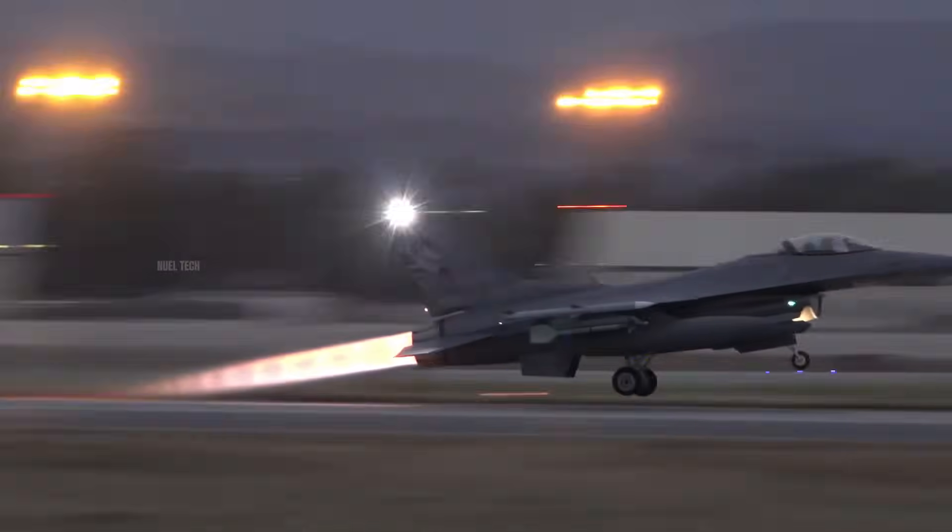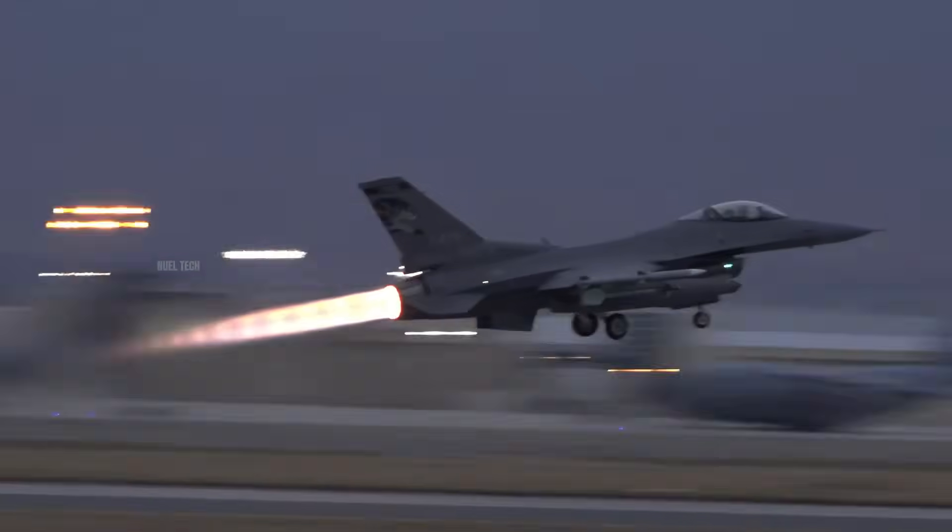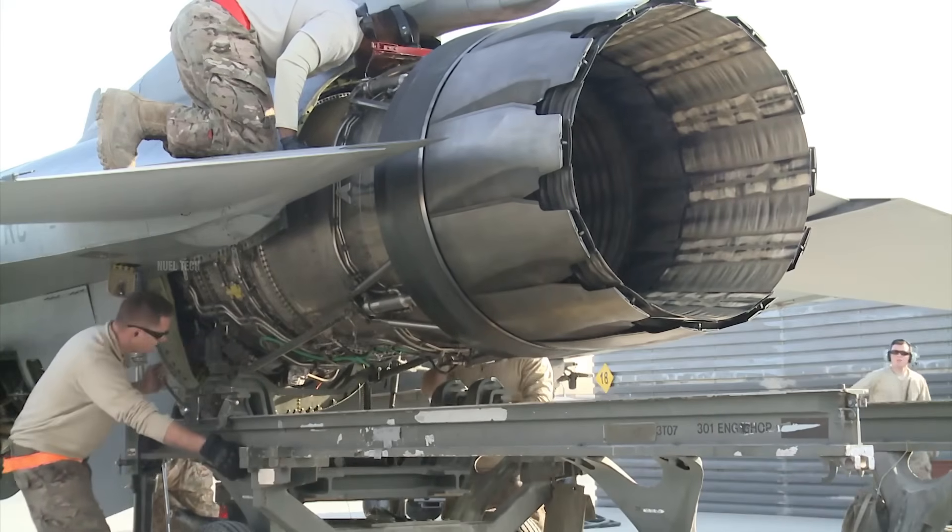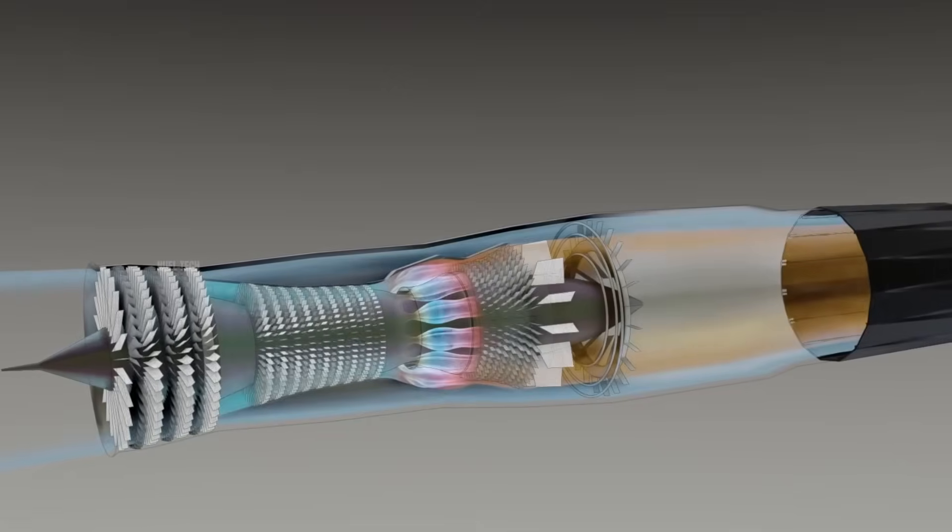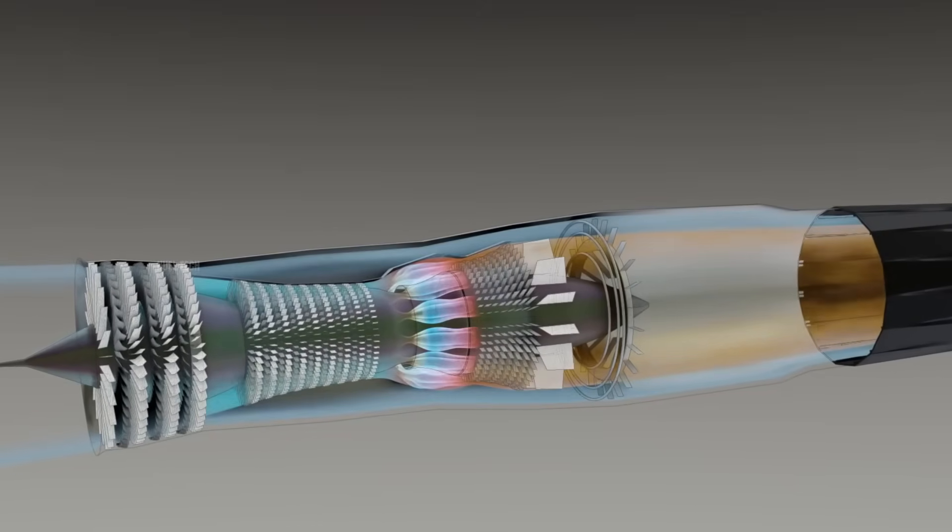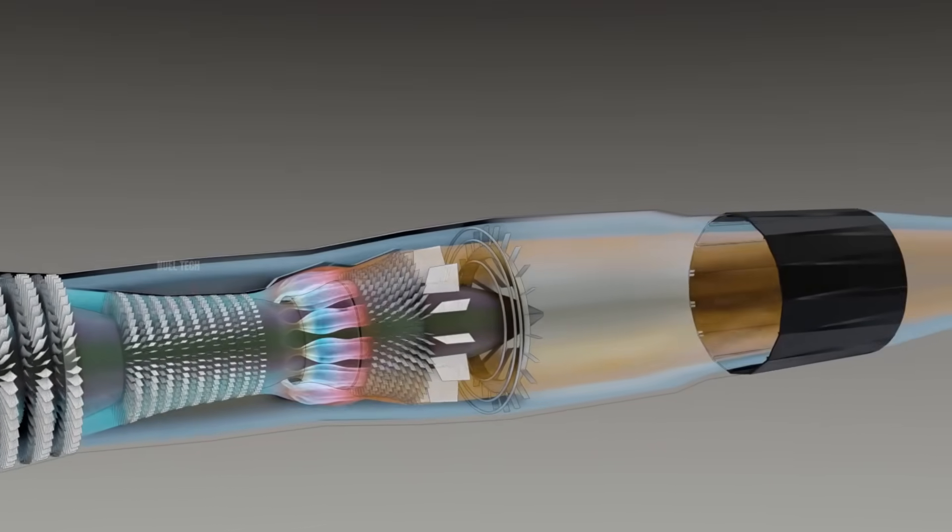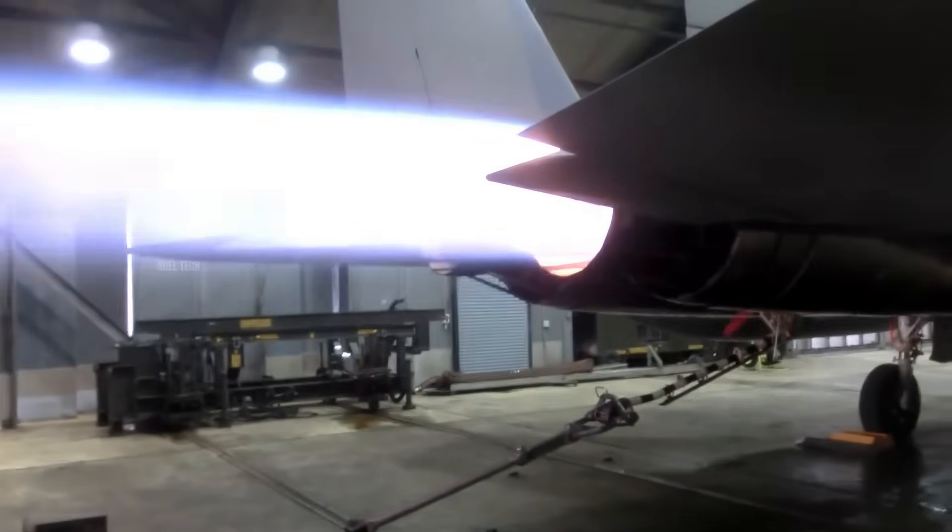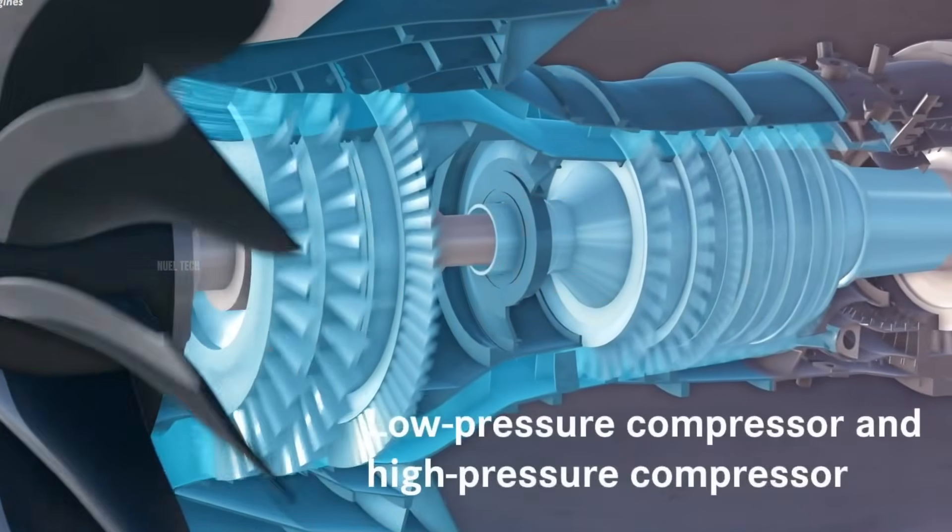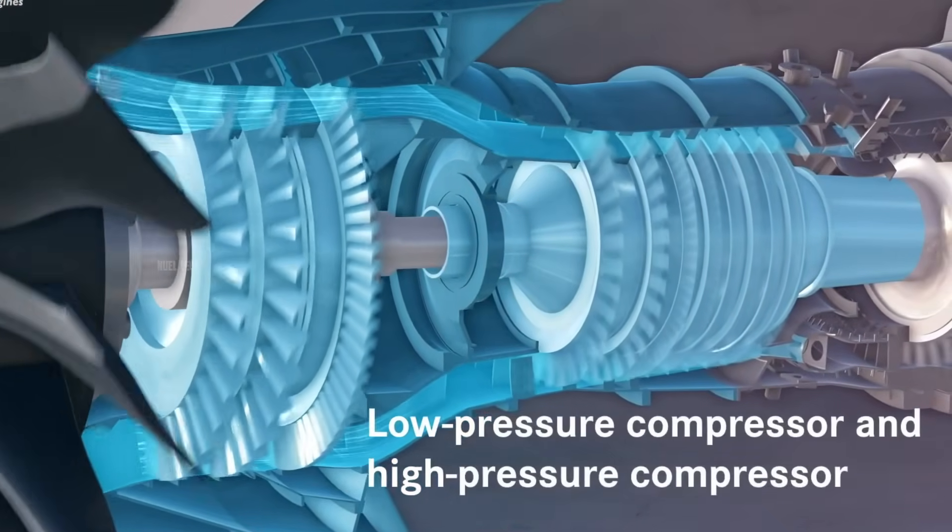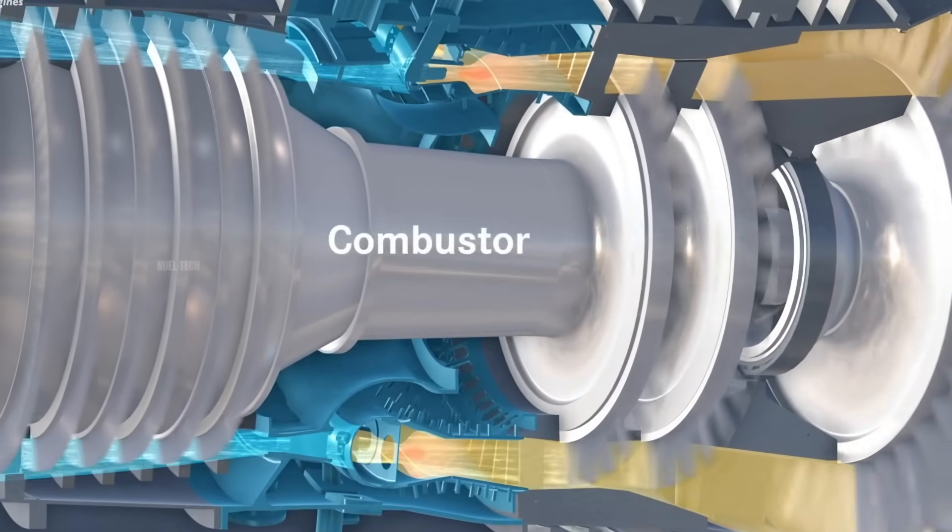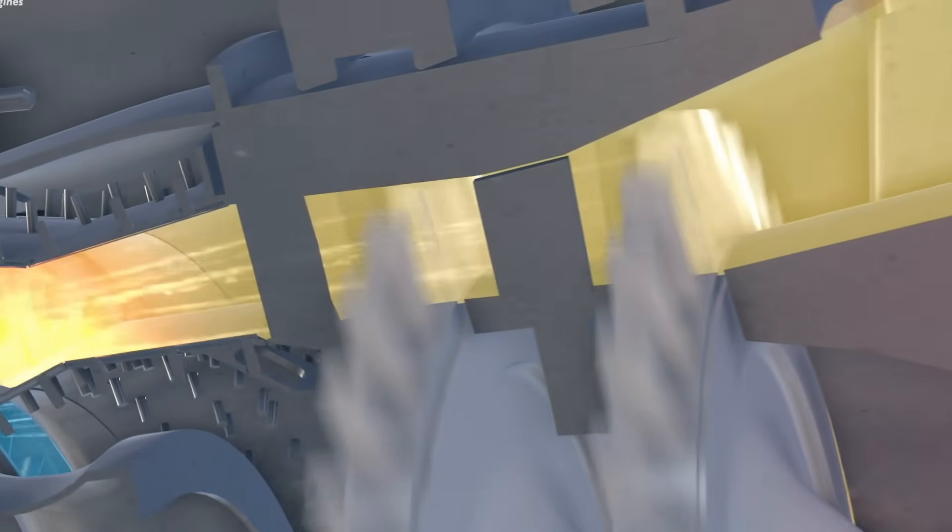This video is a continuation of our previous discussion about jet engines. In the last video, we explained how jet engine components such as the combustion chamber, turbine blades, and nozzle are able to withstand extremely high temperatures without melting. This is made possible by a cooling system that uses compressed air to form a protective layer, preventing direct contact between the components and the hot gases.